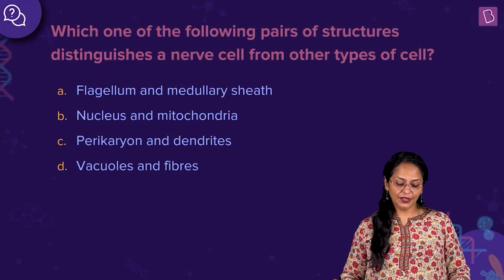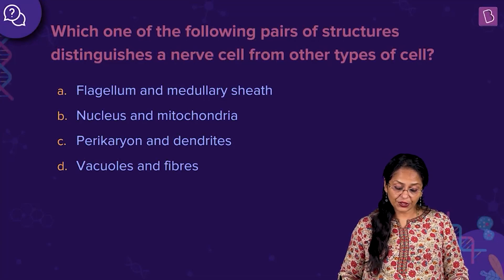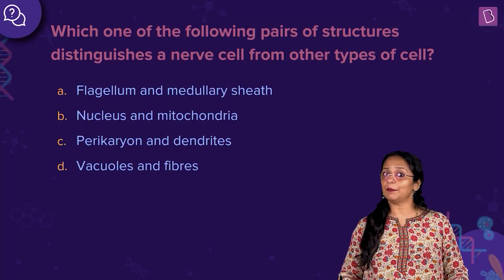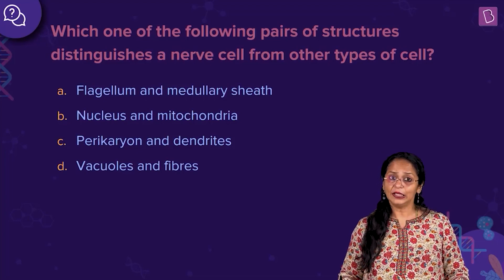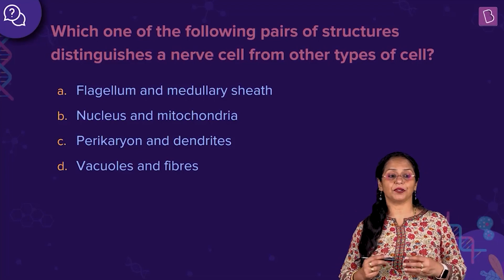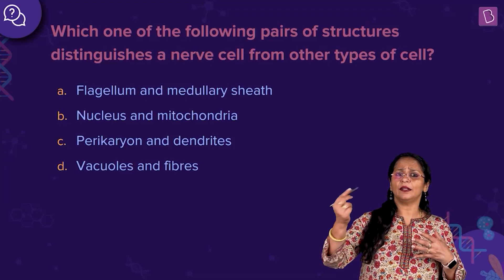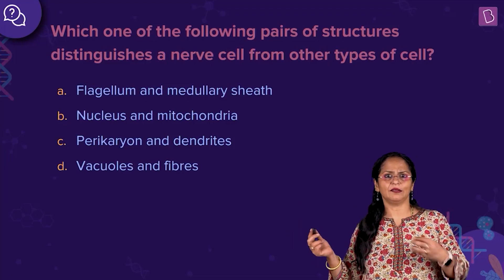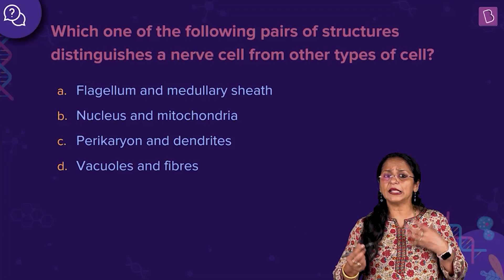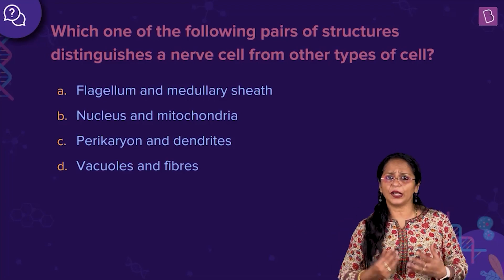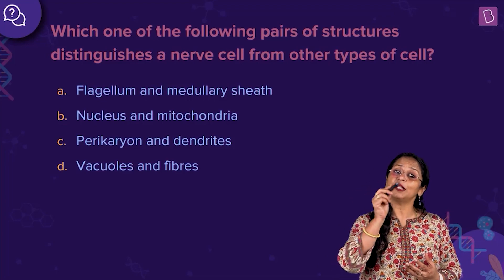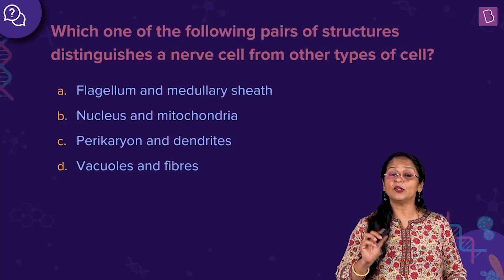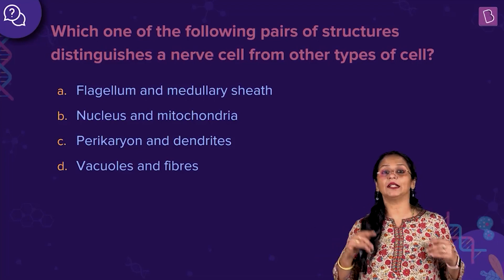Now let us look at this question. Which one of the following pairs of structures distinguishes a nerve cell from other types of cells? The nerve cell is the neuron — the fundamental unit of the nervous system. All impulses either reach the neuron and from there go to other nerve cells. Impulses are important for coordination of various functions in the organism and are transmitted through these neurons. Now, which pair of structures differentiates a nerve cell from other types of cells?